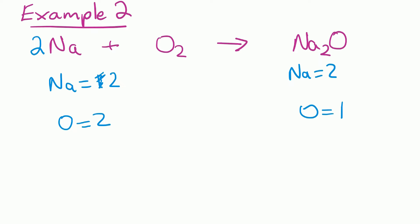All we can do is put big numbers in front, so we need to put a big two in front of the O2, which now gives us two oxygens. But unfortunately that also multiplied the Na, so we've now got four Nas. That means we've got to go back to the left-hand side and change that two to a four. Final check: four Nas on each side and two Os on each side. That one is balanced.